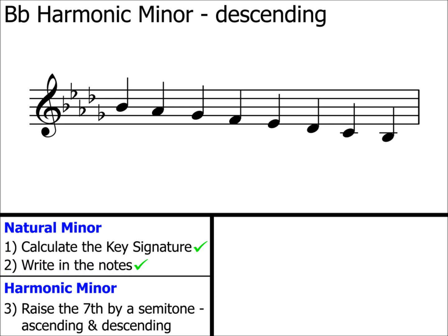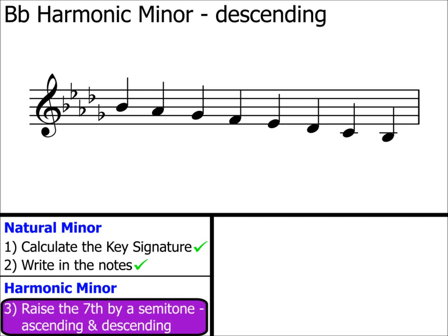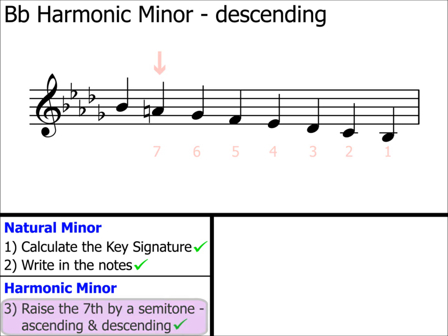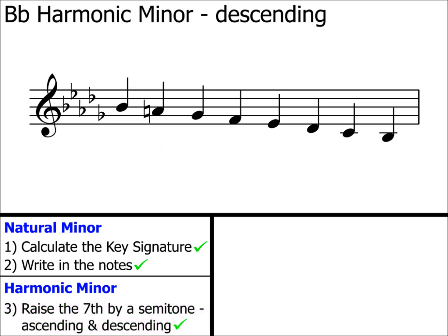To convert it to B flat harmonic minor, we follow step three: raise the seventh by a semitone. Count the notes up from the B flat to find the seventh note — here it is, A flat. We need to raise this note by a semitone, so we add in a natural symbol to make it A, A being one semitone higher than A flat. Step three: complete. We now have our B flat harmonic minor descending scale.